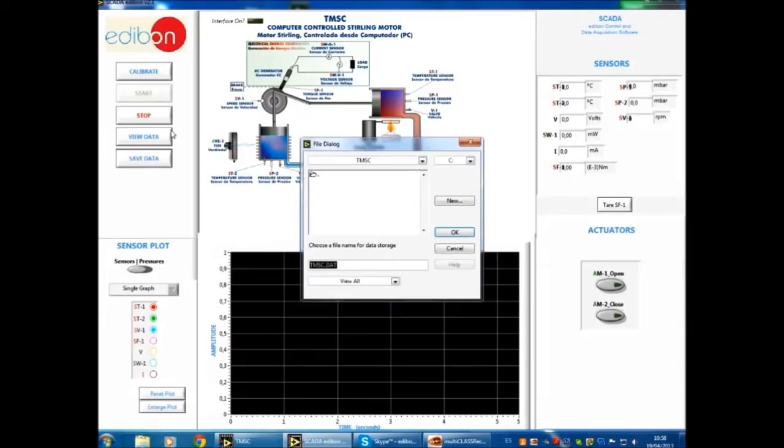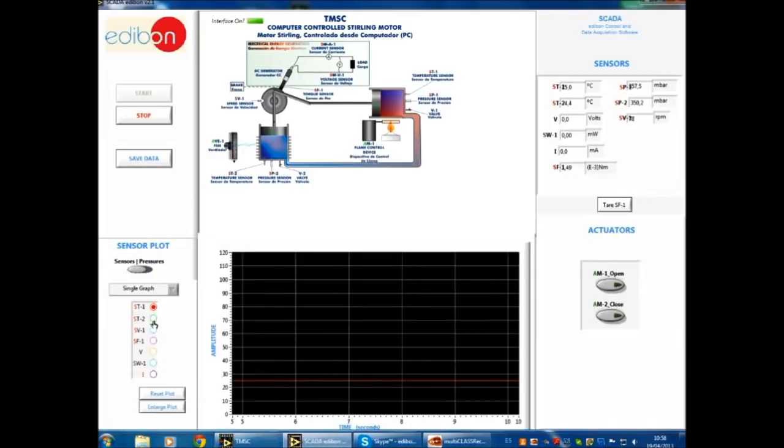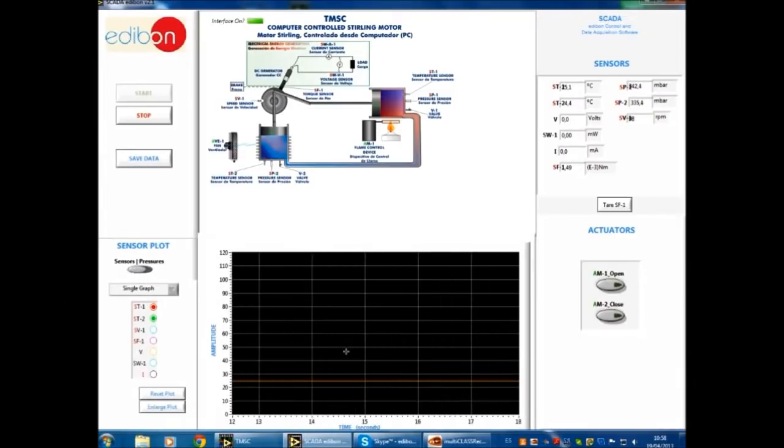Choose a file name of your choice and hit OK. The system can graph all parameters. Let's display temperature. A toggle switch displays a graph of the pressure in the cylinders. The sensors region displays the real-time value of all system parameters. With the electrical generator disconnected, notice how the voltage and current are both zero. In the actuator region, pressing the open button allows the flame to heat the engine, while the close button blocks the flame. Leave the actuator open.